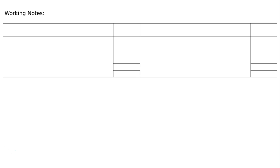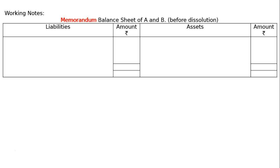Here, the sundry assets are not given. Hence, we are supposed to prepare one memorandum balance sheet in the working notes to find out the sundry assets. Under working notes, prepare the memorandum balance sheet of firm A and B before dissolution. Draw the balance sheet format and start from the liability side.